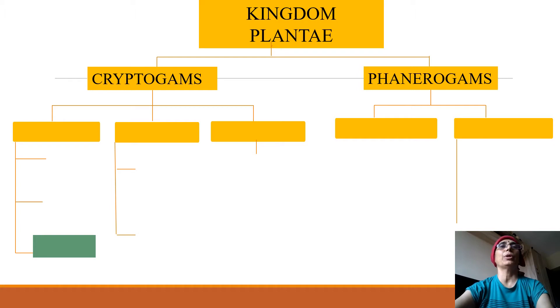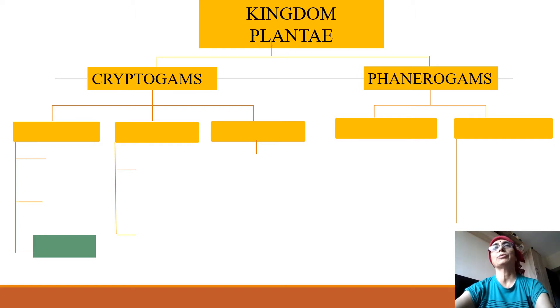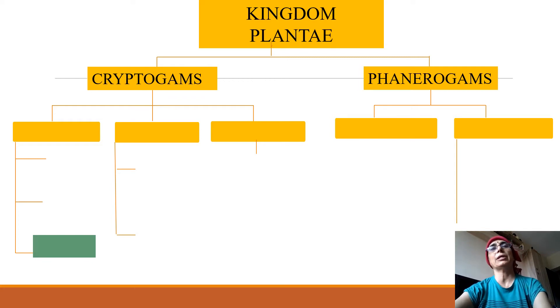In cryptogames, the plant body is not well differentiated into roots, stem, and leaves — in phanerogames it is. In cryptogames, there is no seed formation; in phanerogames, seed formation takes place. In cryptogames, there is no flowering; in phanerogames, flowering takes place.